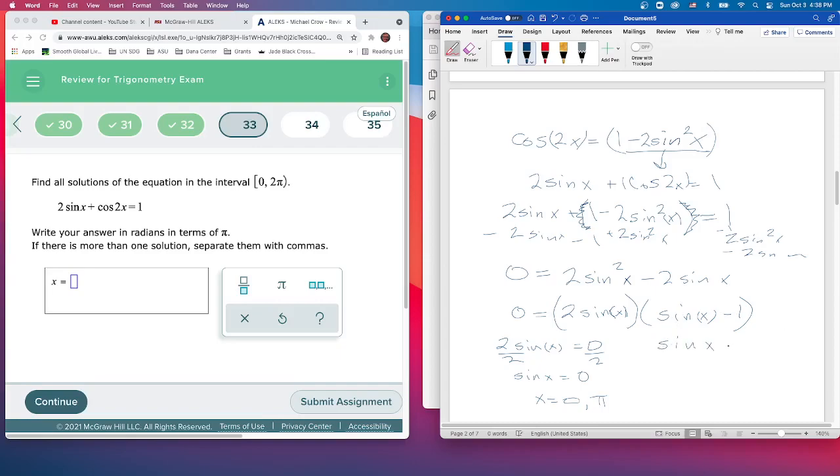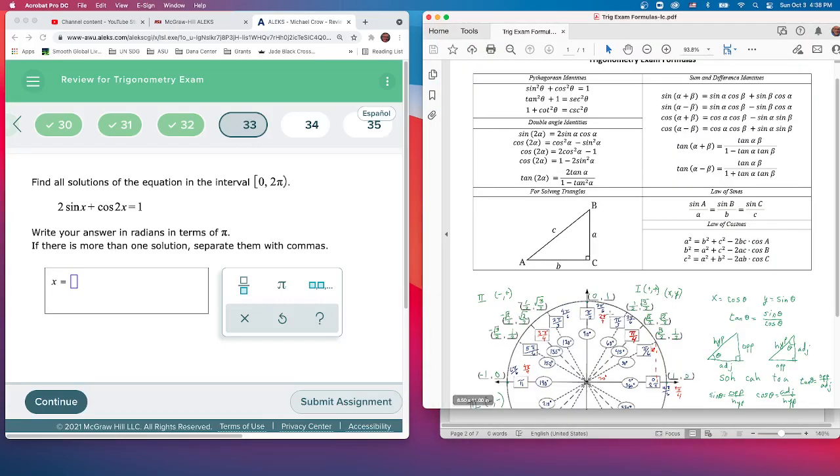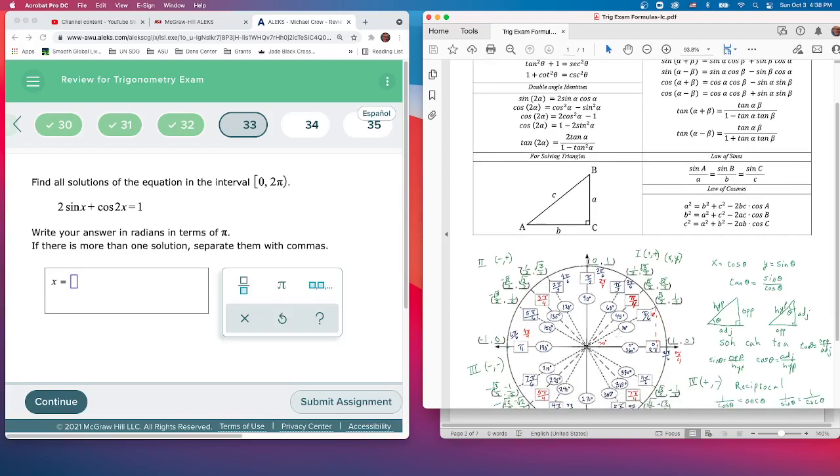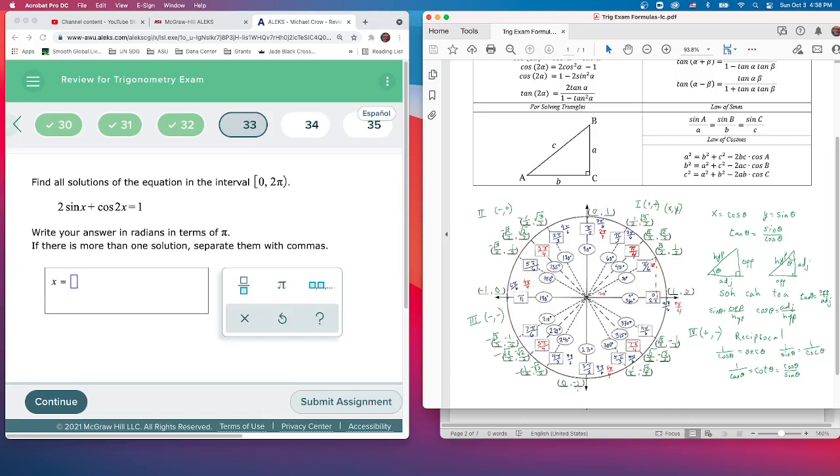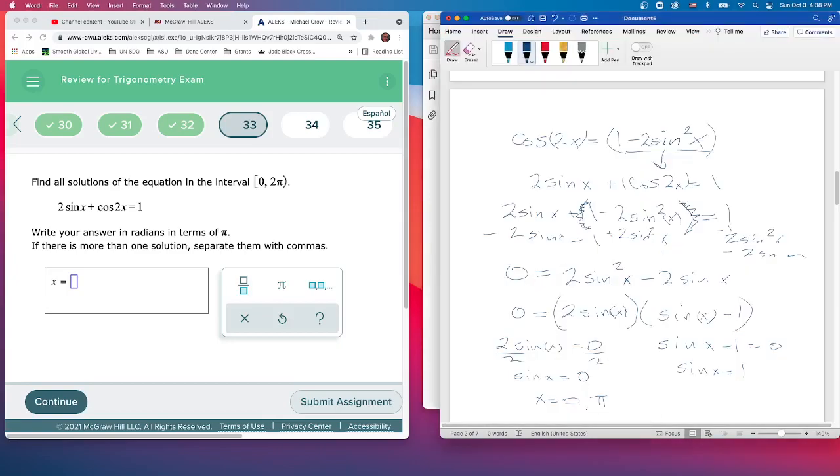The other solution comes when sine X minus 1 equals 0. Add 1 to both sides and get sine X equals positive 1. There's one place where the y-coordinate equals 1, and that's at the north pole, at the top—that's π/2. At the south pole at the bottom, the y-value is negative 1, so there's only one place. This gives us X equals π/2.